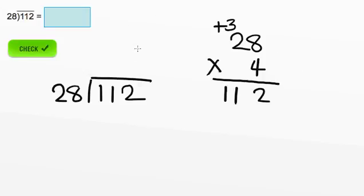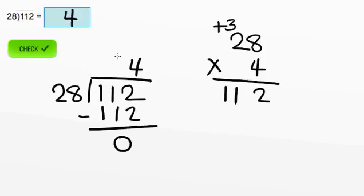So this tells us that 28 goes into 112 four times. 4 times 28 is 112, and 112 minus 112 is 0. So 112 divided by 28 is 4. I'll see you later. Thank you.